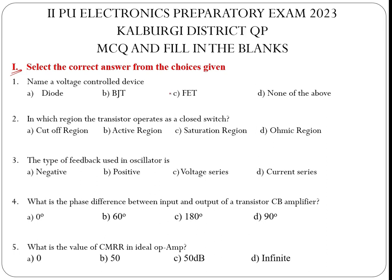Obviously, the voltage controlled device is FET, because BJT, as you all are aware, is a current controlled device, whereas a diode is a switching device — used as a switch, as a rectifier, etc.